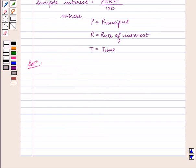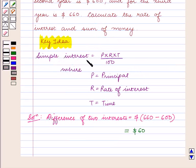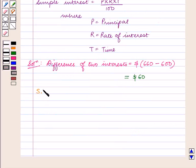First we shall calculate the difference of two interests which will give us the simple interest for the last period. The difference of two interests is equal to $660 minus $600 which is equal to $60. As simple interest is equal to $60, the principal P is equal to $600, and the time T is equal to 1 year.